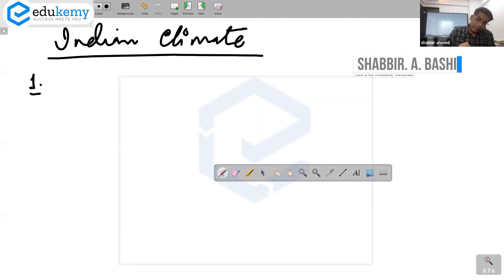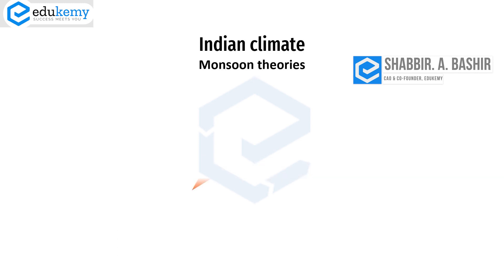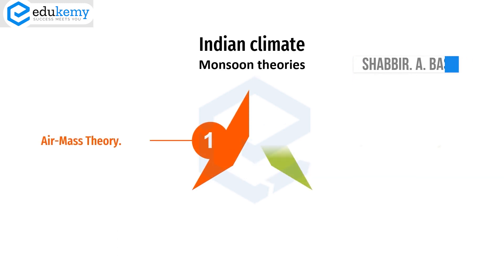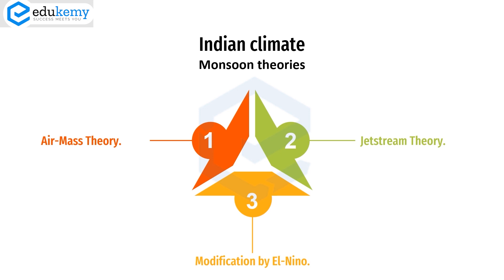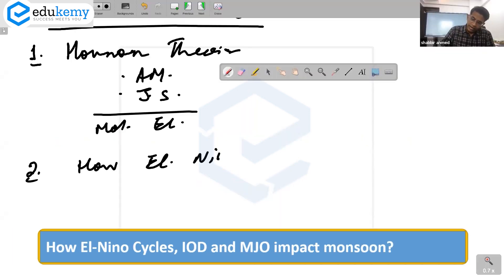Indian climate, number one in this, the monsoon theories: the air mass theory, the jet stream theories, and the modification by El Nino. Spend some more time on how El Nino, Indian Ocean Dipole, and Madden-Julian oscillations impact monsoons.